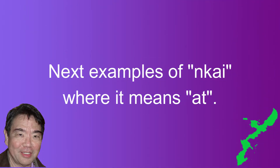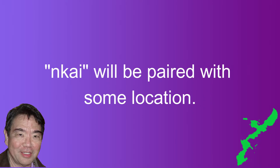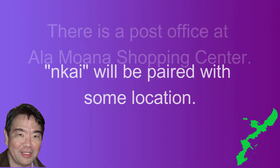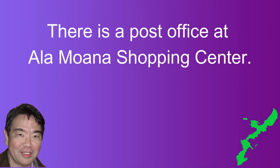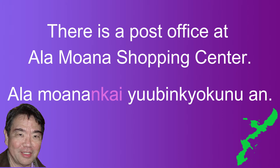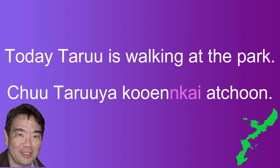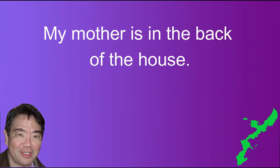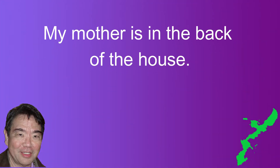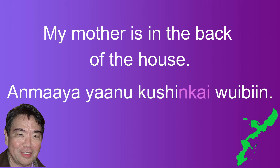We'll look at some examples where unkai is used to mean 'at.' In this case, unkai will always indicate some location. There is a post office at Alamana shopping center: Alamana ngkai yubing kyokunu ang. Today, Taru is walking at the park: Chuu Taru ya koueng kai achong. My mother is in the back of the house: Amma ya ya nu kushinkai uibing.